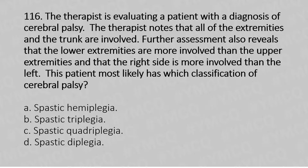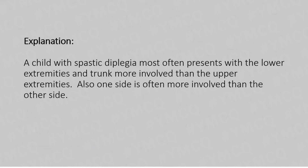Option A: spastic hemiplegia. Option B: spastic triplegia. Option C: spastic quadriplegia. Option D: spastic diplegia. The answer is option D — spastic diplegia. A child with spastic diplegia most often presents with lower extremity and trunk more involved than the upper extremity, and one side is often more involved than the other side.